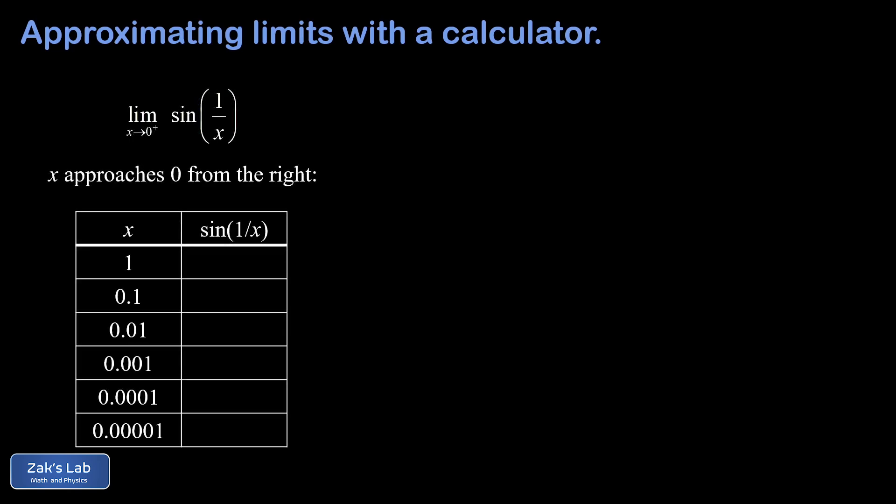So we set up our approach to zero from the right by using a simple pattern. We're going to look at x equals 1, x equals 0.1, x equals 0.01, and so on and so on, each time zooming in by a factor of 10.